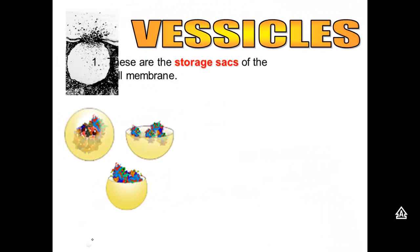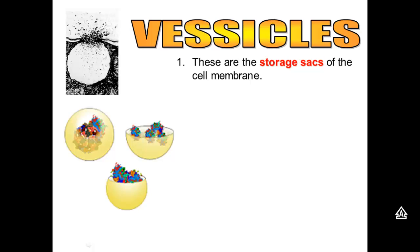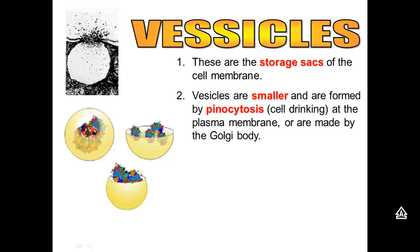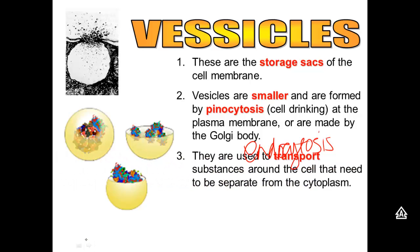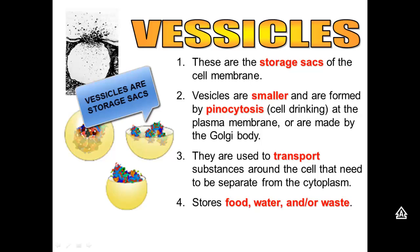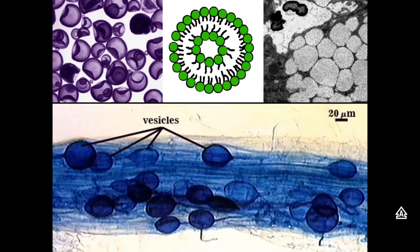Next let's talk about vesicles. Vesicles are basically just storage sacks — they're very small. They're formed when things come into the membrane, and that's called endocytosis. They're also formed when things are made at the rough ER, the smooth ER, and the Golgi body. So they're used to transport substances around the cell — things that have to be kept separate from the cytoplasm: food, water, waste. They're basically storage sacks.